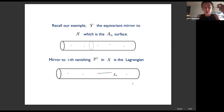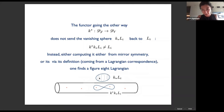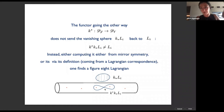In our running example of Y — the equivariant mirror of the A(-1) surface — the mirror to the i-th vanishing P^1 in small X, which acts as a simple module of algebra A, is simply the right thimble Lagrangian running between the corresponding endpoints. The functor going up pairs it with a circle fiber over it, giving a vanishing P^1 upstairs — actually a vanishing S^2, a Lagrangian sphere in big Y. The functor going down doesn't send the interval brane back to itself; it sends the interval brane to a figure eight.